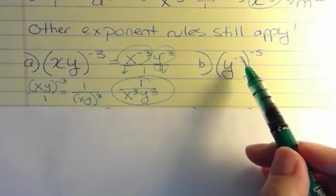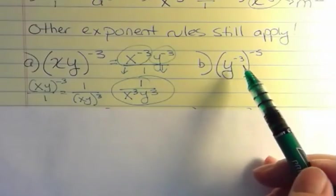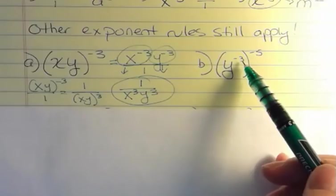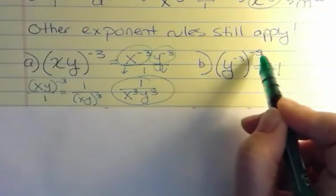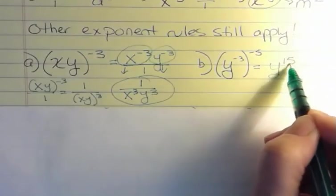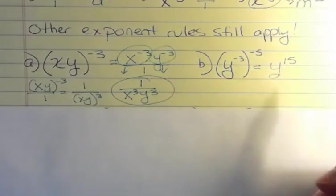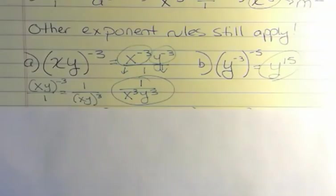What about this one? Well, I could start shifting things around, but there's a rule to the exponent that says if you raise a power to a power, you multiply. So I'm going to do that. Negative 3 times negative 5 is positive 15. Now I don't even have a negative to worry about. That's it.